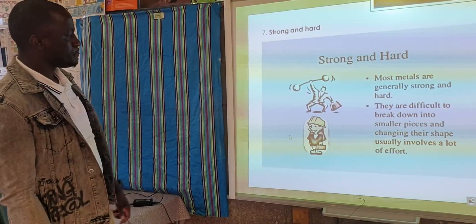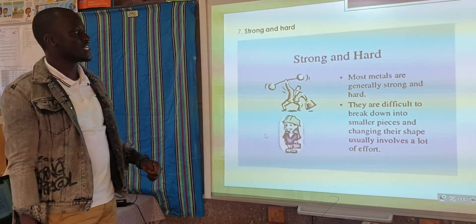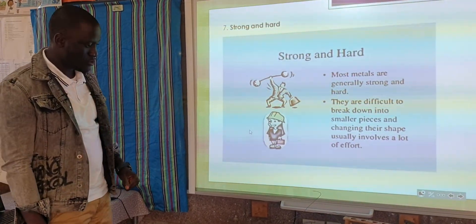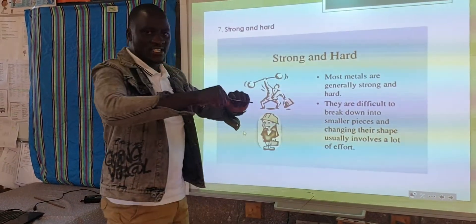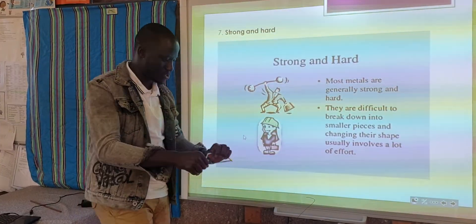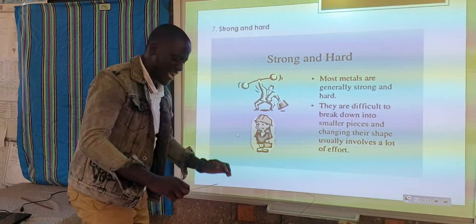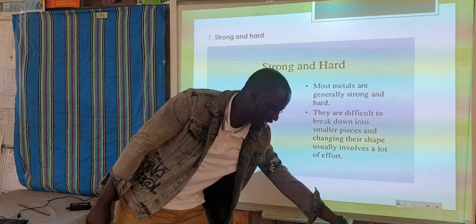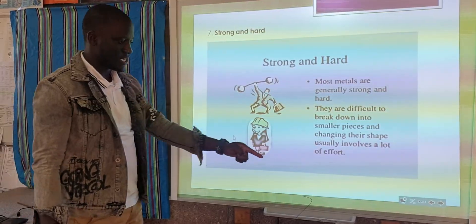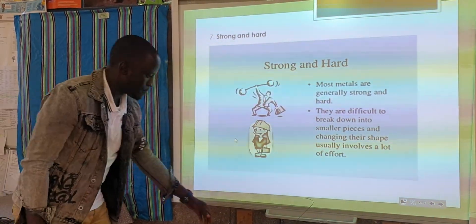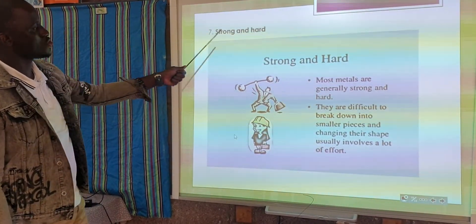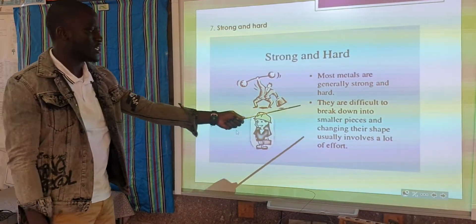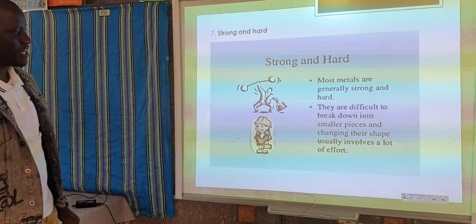This is a fact — in most cases we prefer using metals because metals are strong and they are hard. If I take this metal and try to bend it, it's very, very difficult to do that. But if I take a stick to check whether it's strong or hard, when I do it like this, it brittles or it breaks. That shows that a property of non-metals is that they brittle or break when they are bent. Most metals are generally strong and hard — they are difficult to break down into smaller pieces, and changing their shapes usually involves a lot of effort.